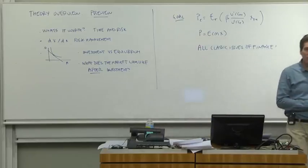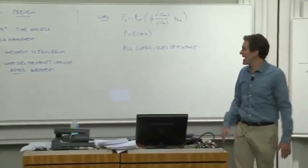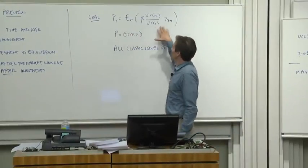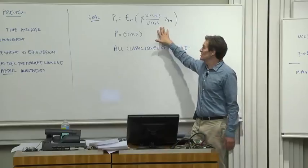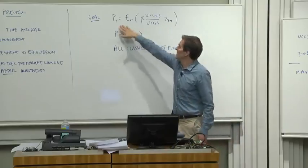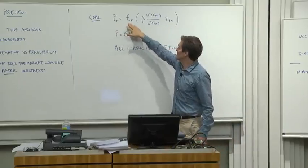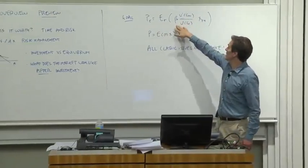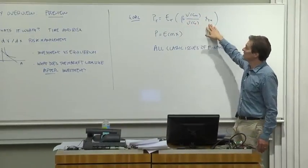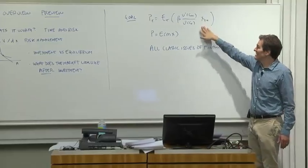Where are we going to go? So our goal for the rest of today is to derive the basic asset pricing formula. The way our theory works is this formula. Price is expected, discounted by marginal utility payoff. That's it.